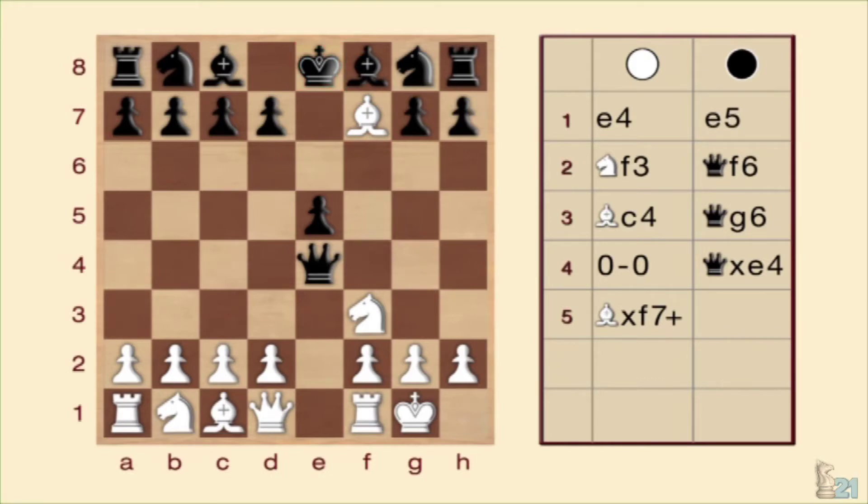Las negras caen en la trampa, lo toman y dejan en bandeja al rival la posibilidad de hacer todo un jaque doble con el caballo a la pareja real. Como sabéis, el jaque de caballo obliga al rey a moverse, con lo que Greco se comió la dama de su rival, que abandonó después de tan solo siete jugadas.